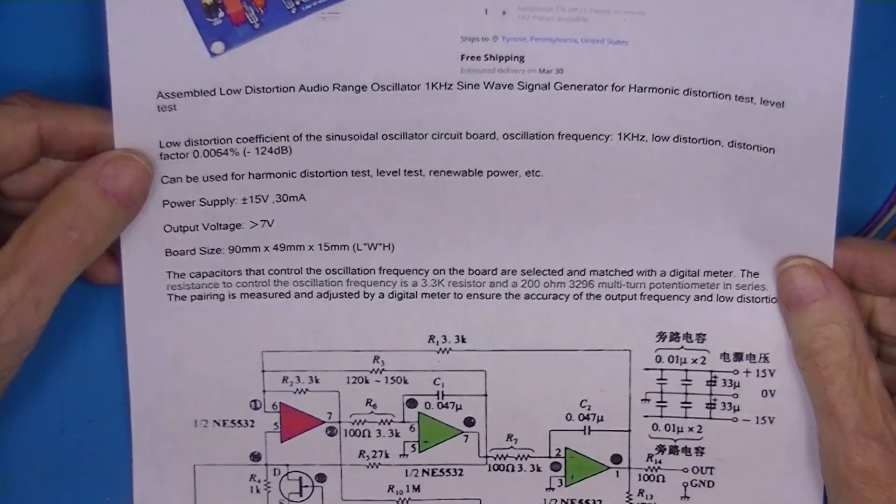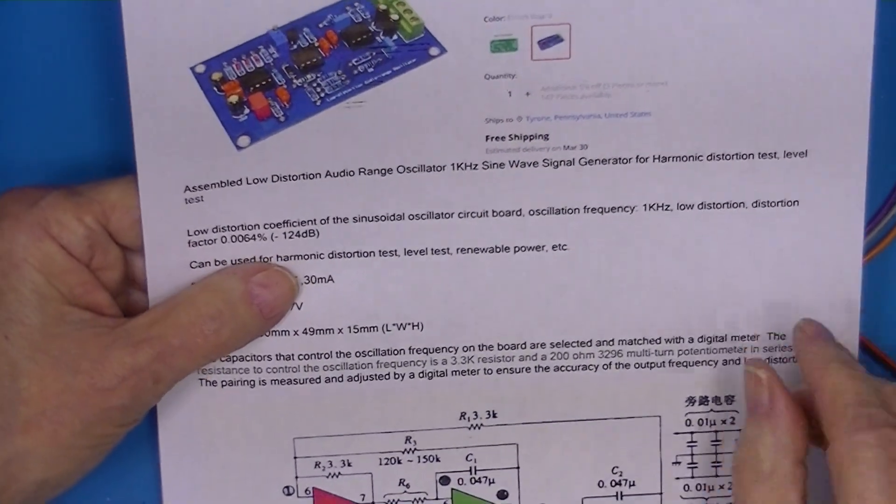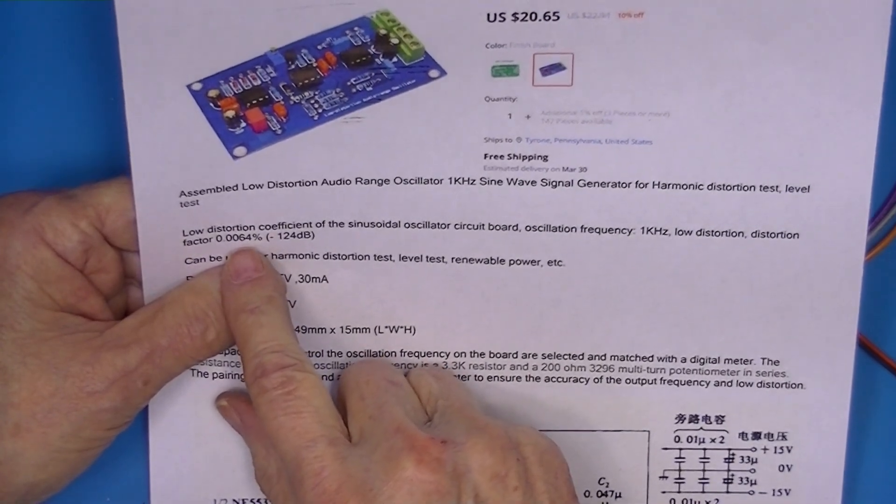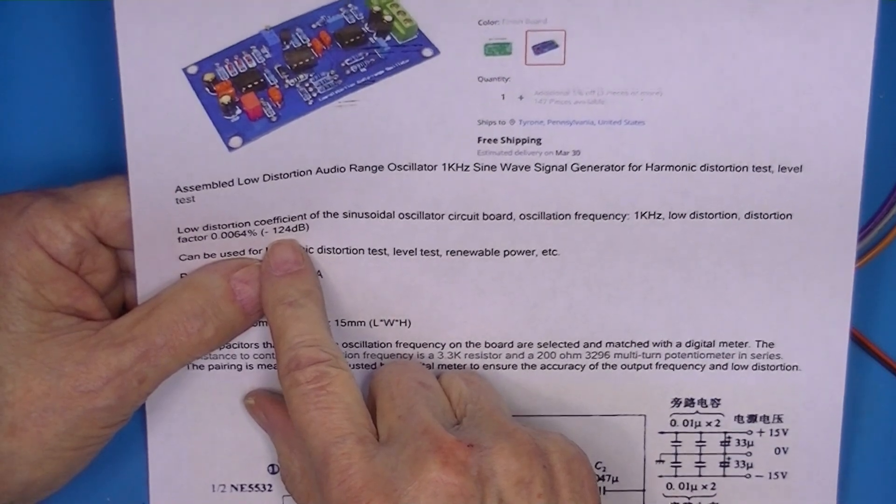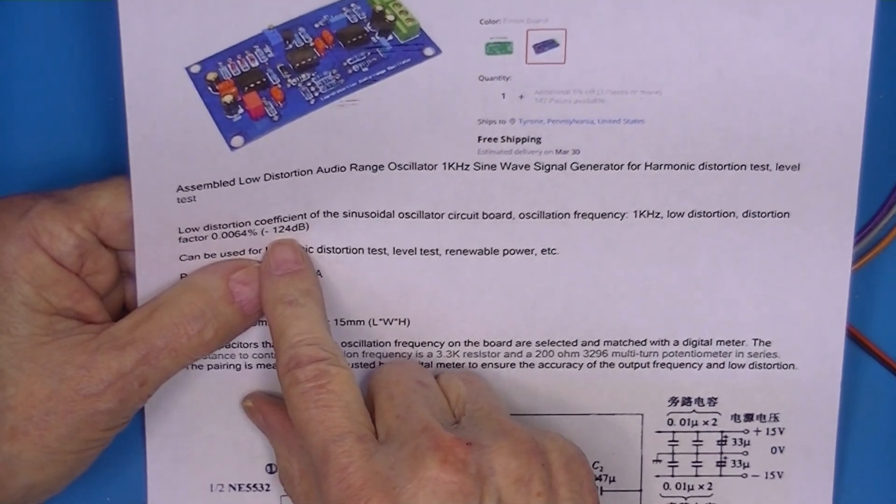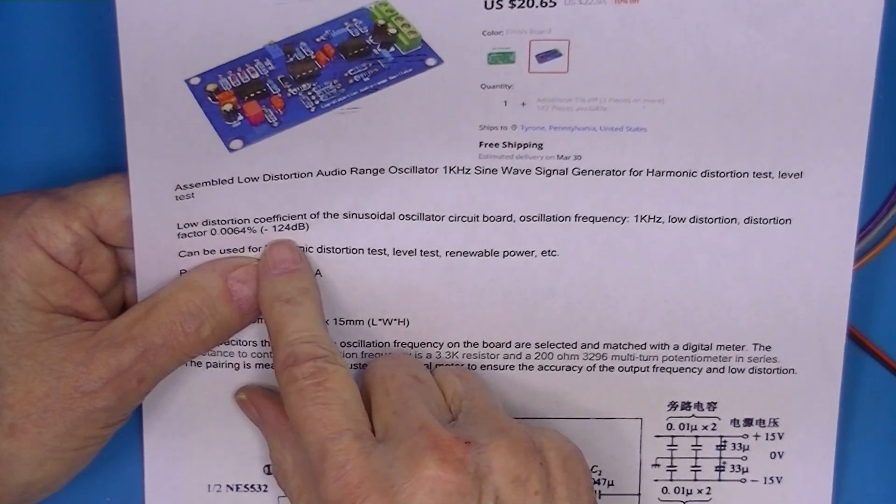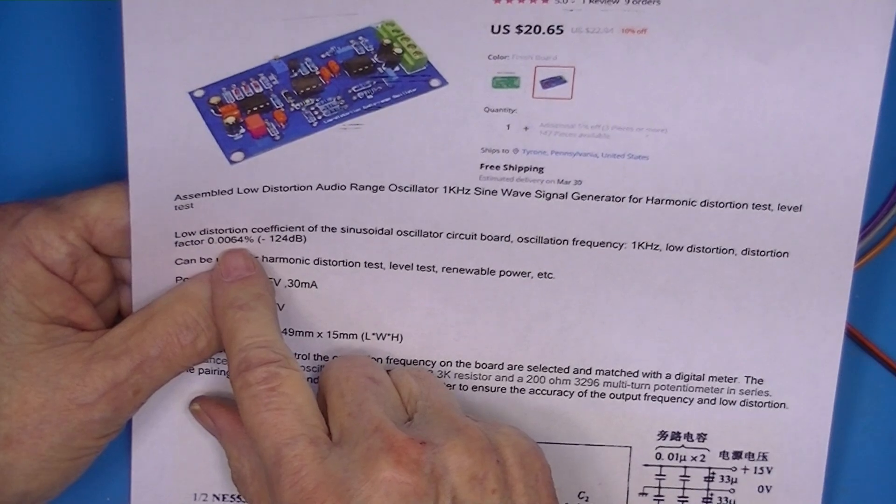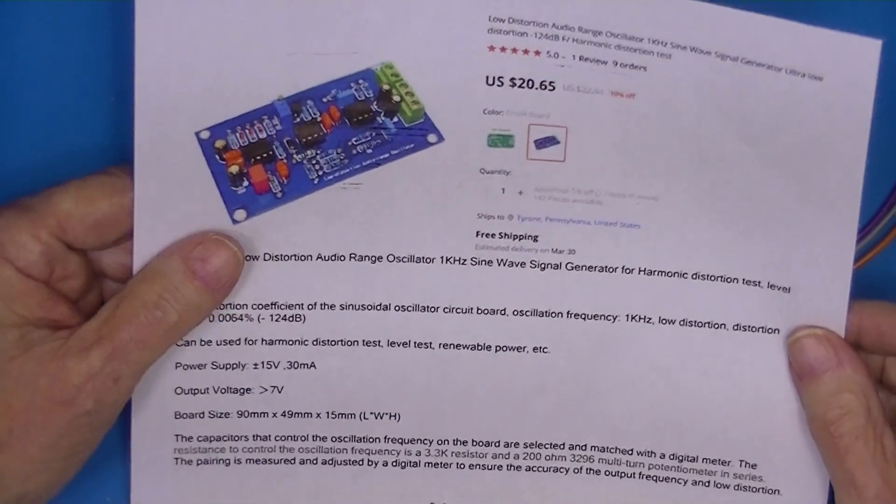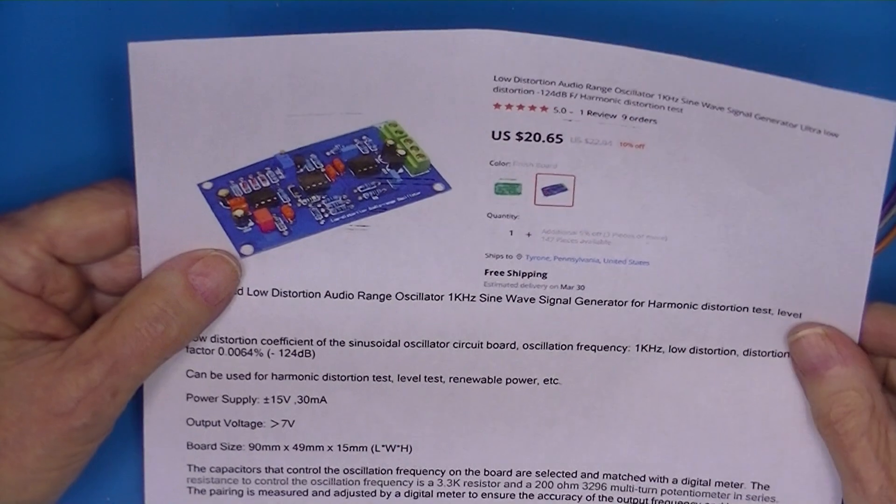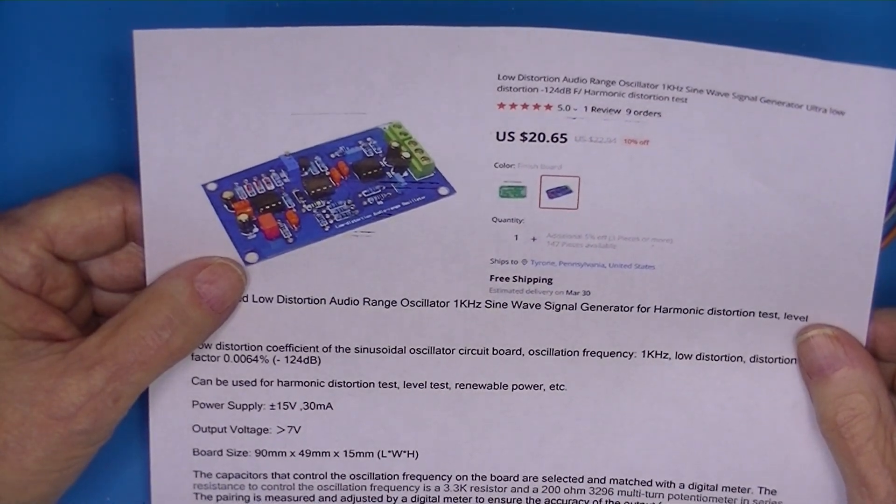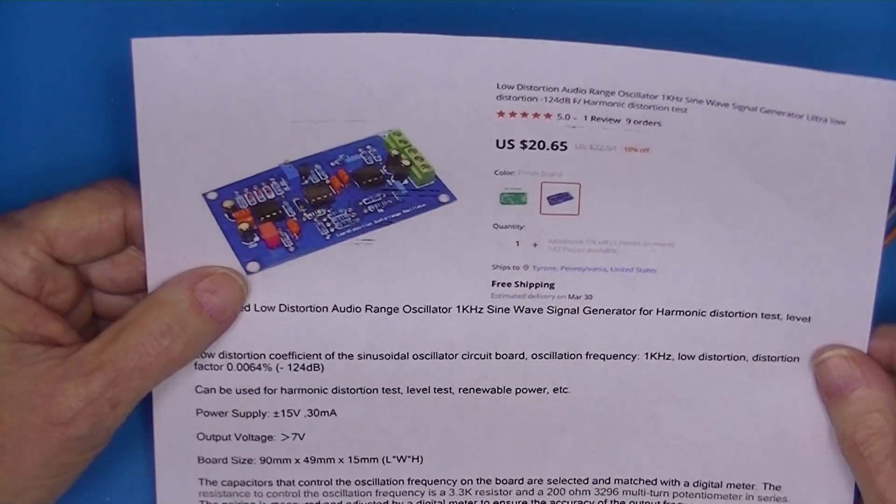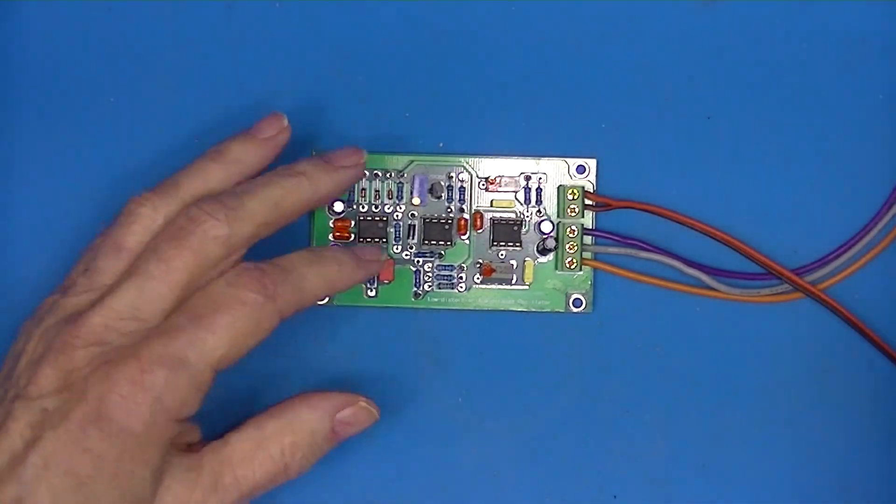In any event, the critical thing is 0.0064 percent or minus 124 decibels of distortion. This is quite good, at least for my usage. I actually wanted to test some of these JLH69 amplifiers, and to do a really good distortion test, you should have a good audio source.